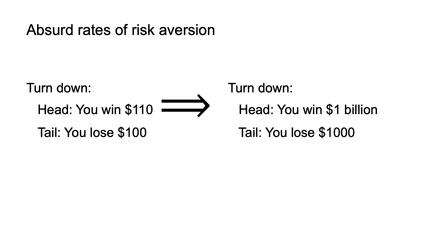At face value, that is ridiculous — but that is the crux of the argument. Turning down a low-value bet with a positive expected value implies that the marginal utility of money must decline quickly for small changes in wealth. Rejection of a low-value bet to win $110 or lose $100 would lead to absurd responses to higher-value bets. This leads Rabin (2000) to argue that risk aversion, or the diminishing value of money, has nothing to do with the rejection of low-value bets.